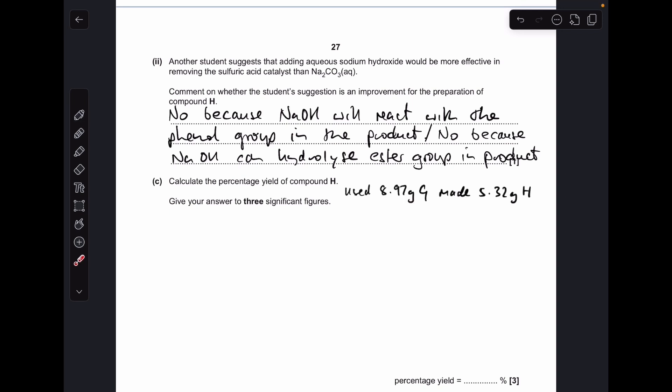Moving on to part C, the percentage yield calculation from the previous page. They've used 8.97 grams of G and made 5.32 grams of H. First, we'll work out how many moles of G they've used. Mass over MR gives 0.065 moles. Because of the one-to-one ratio, they would expect to make that many moles of H.